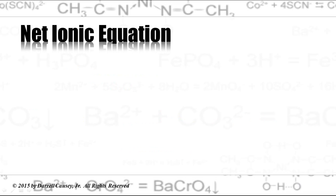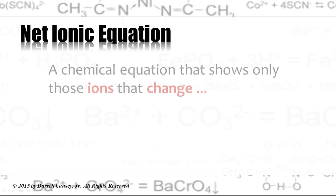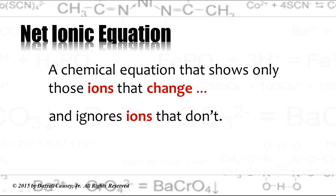And then we write a net ionic equation, which is a chemical equation that shows all the ions that change, but it ignores those that don't change or the spectator ions, as they're called. And so here's our reaction again.